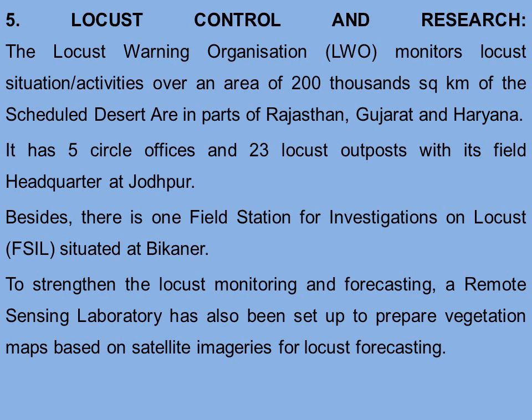Regarding Locust Control and Research: the Locust Warning Organization monitors locust situation and activities over an area of 200,000 km² of the scheduled desert area in parts of Rajasthan, Gujarat, and Haryana. It has five circle offices and 23 locust outposts with its field headquarters at Jodhpur. Besides, there is one field station for investigations on locusts situated at Bikaner.